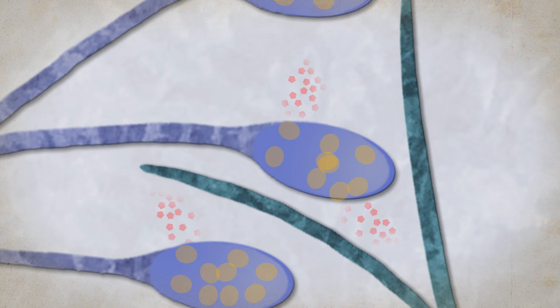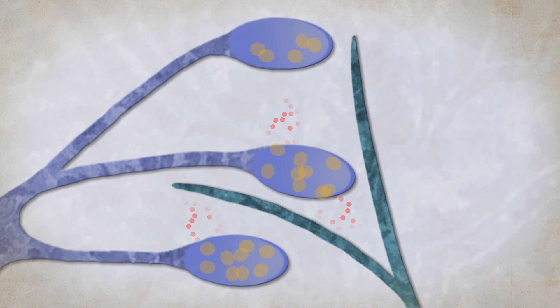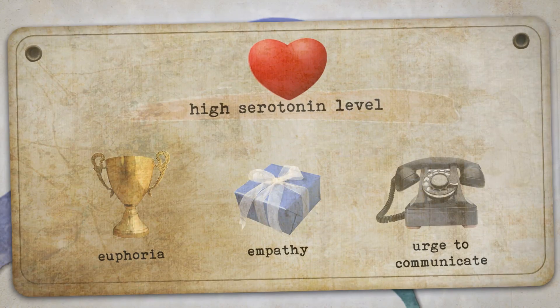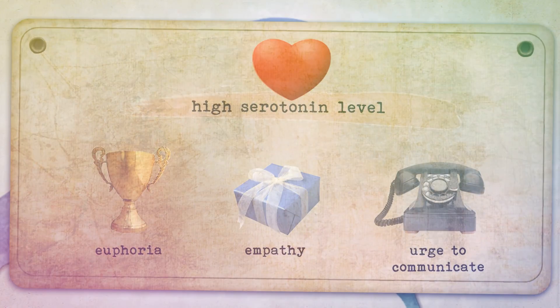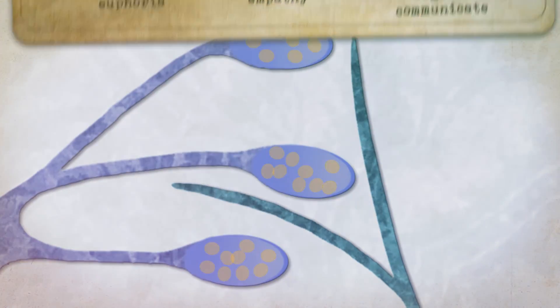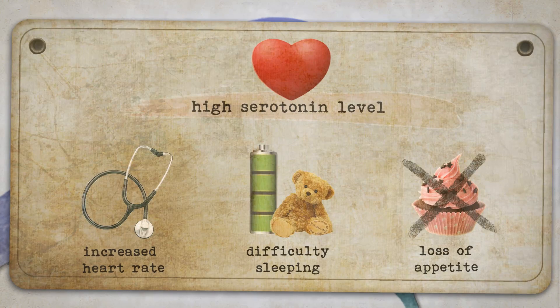MDMA causes cells to release large amounts of serotonin. These large amounts are responsible for the primary effects of MDMA, such as euphoria, empathy, the urge to communicate, and mild hallucinations. Side effects are increased heart rate, difficulty sleeping, and loss of appetite.